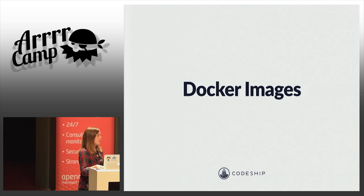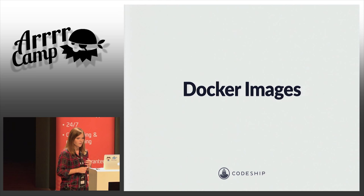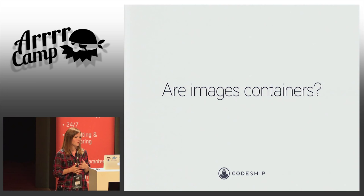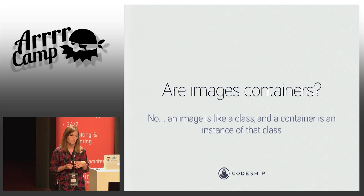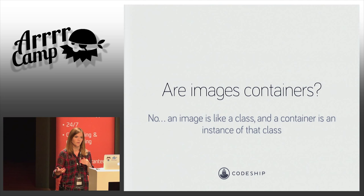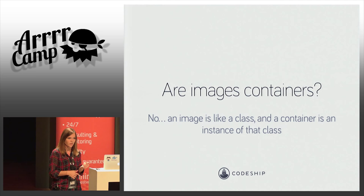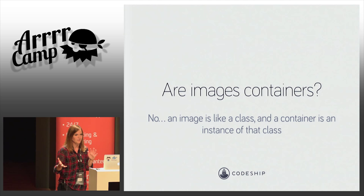Here's a correction I make to people a lot: images and containers are not the same thing. When you interact with Docker and pull down something, you're pulling the image. Think of an image like a class and the container as just the instance of the class. So if you say 'docker pull ruby,' you're not pulling down a Ruby container — you're pulling down a Ruby image that you are going to run inside of a container. It seems pedantic, but it does make a huge difference when talking about a system as complex as Docker to make sure the vocabulary is consistent.